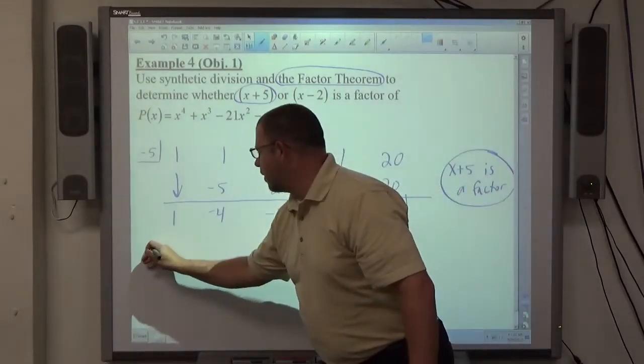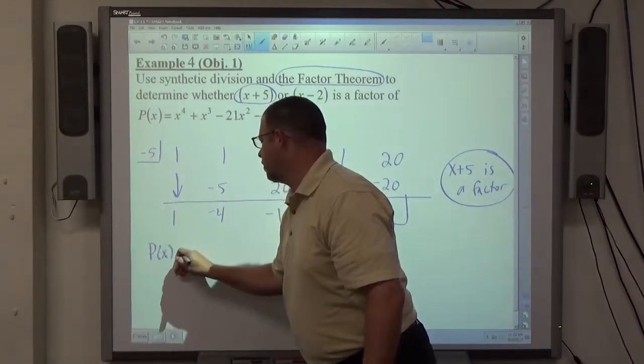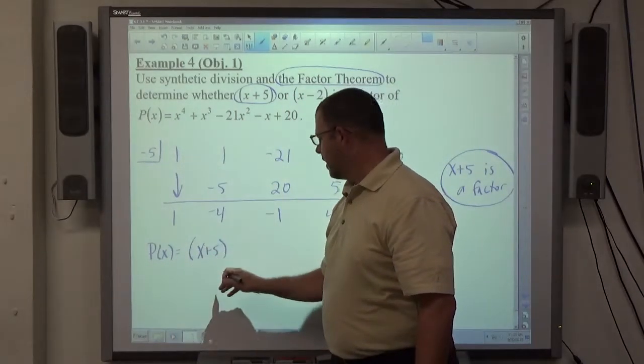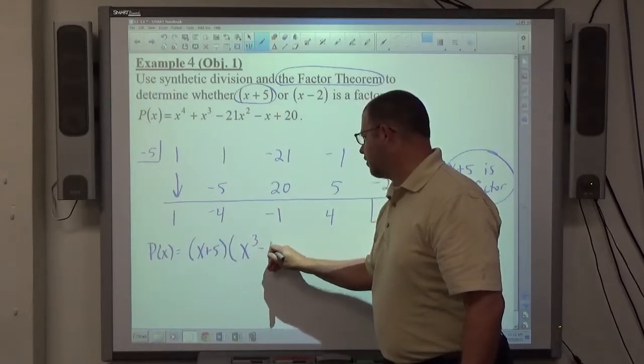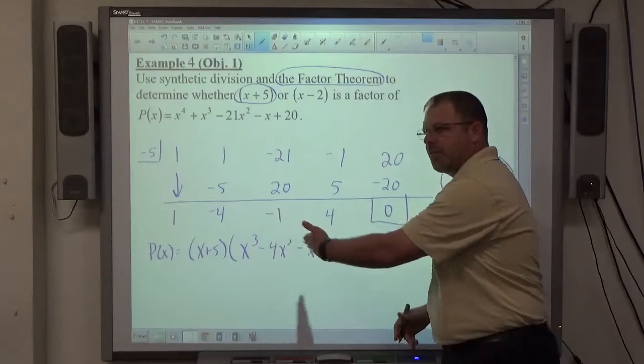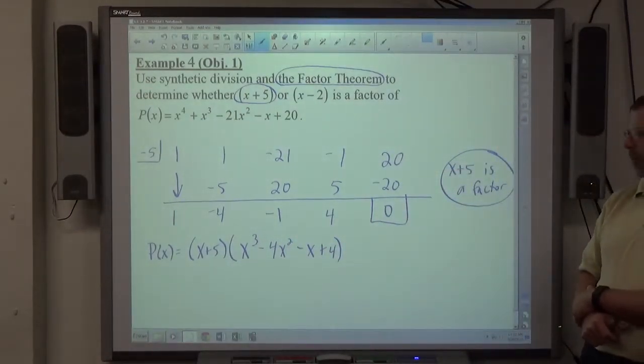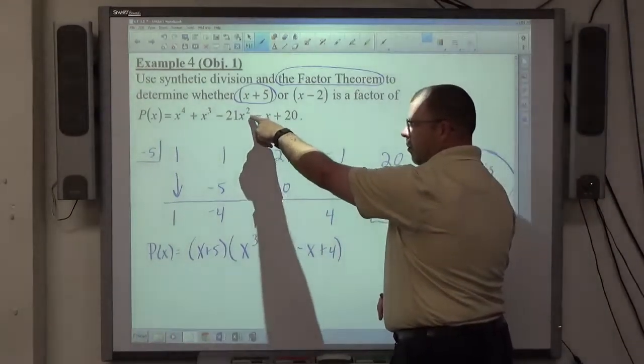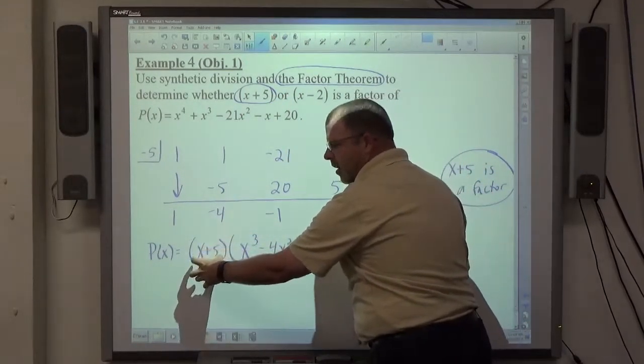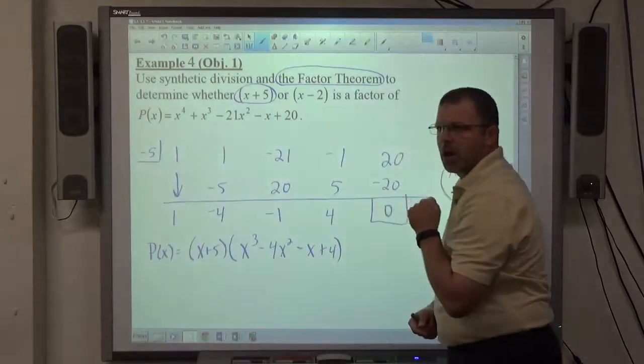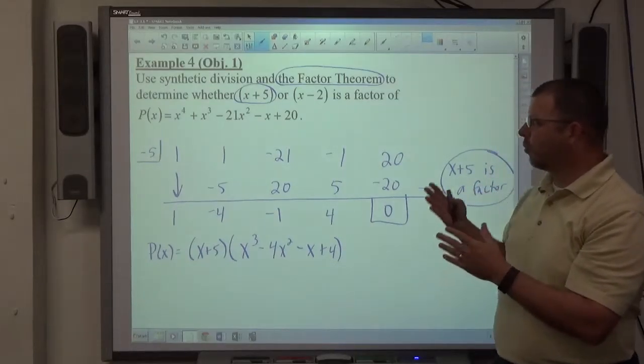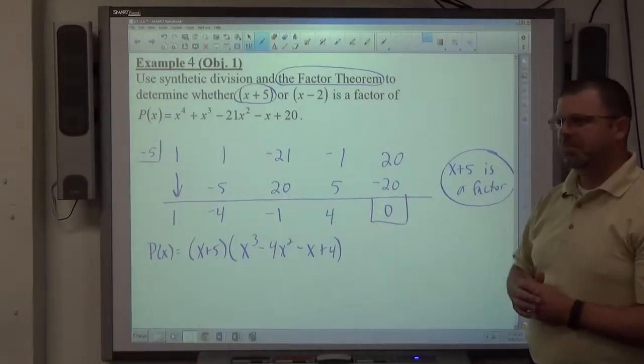So if I can rewrite P of x, if I wanted to, as x plus 5, the factor that we just divided by it, right, times x cubed minus 4x squared minus x plus 4. That is a factored form of P of x. Because again, we just divided this polynomial by this polynomial and got this answer. So the answer times the divisor is equal to the polynomial we started off with. So that's kind of where we're going with this also. So if I ask you to write the factored form, there's the factored form.